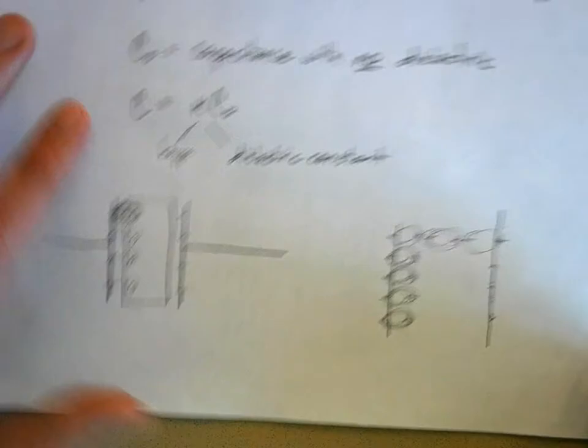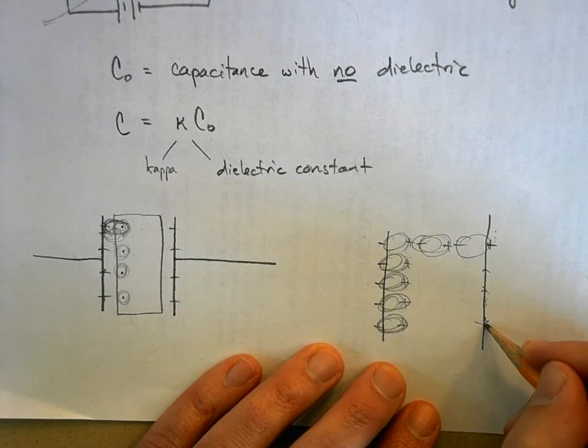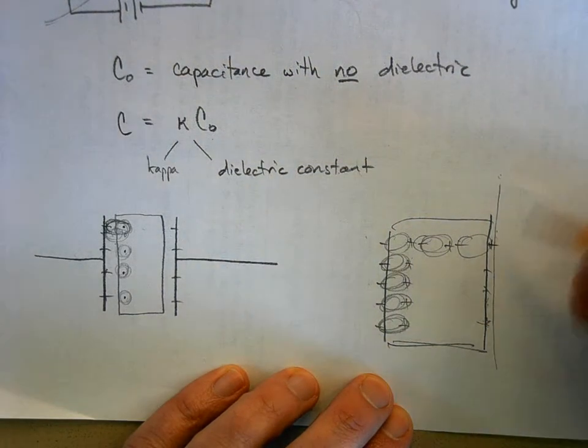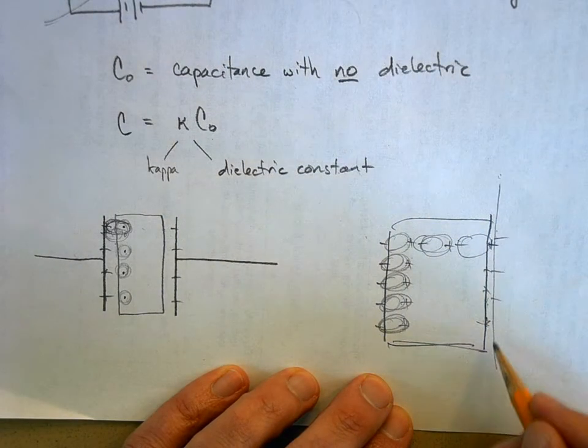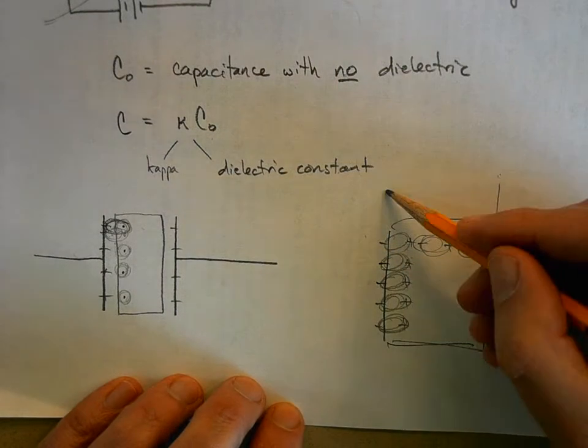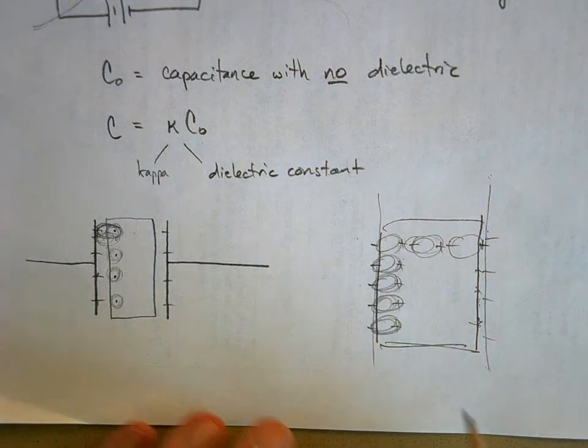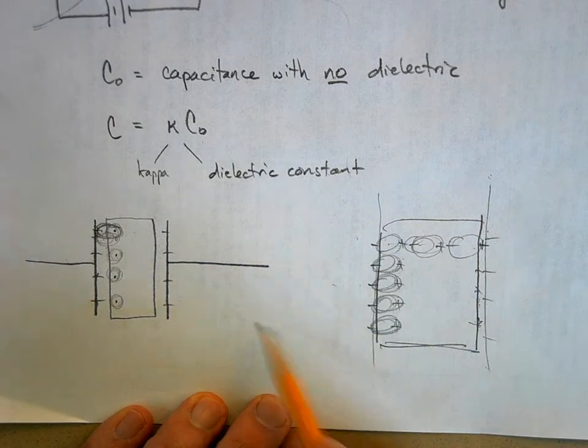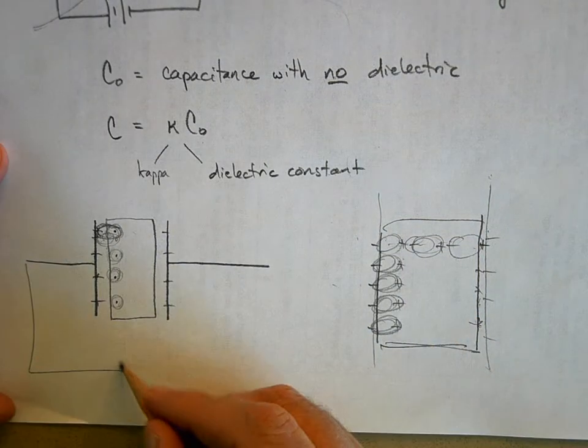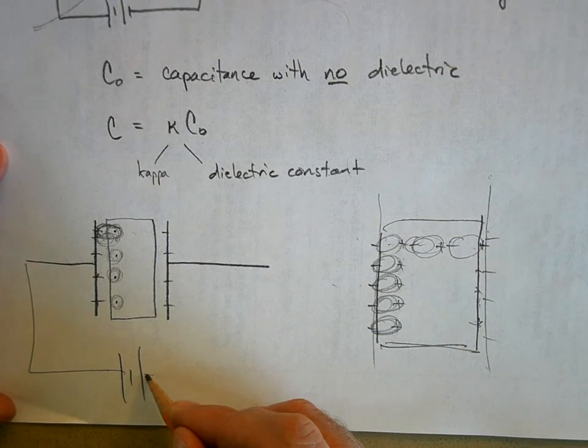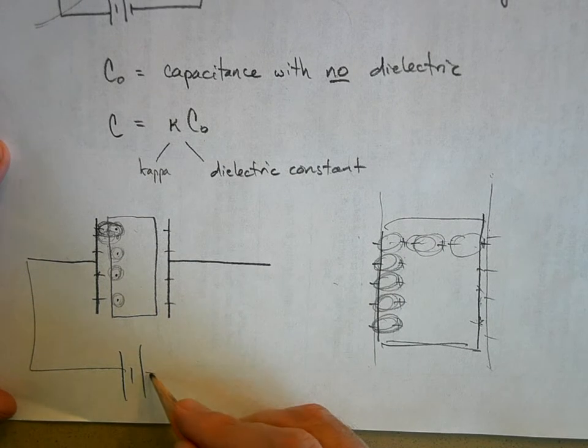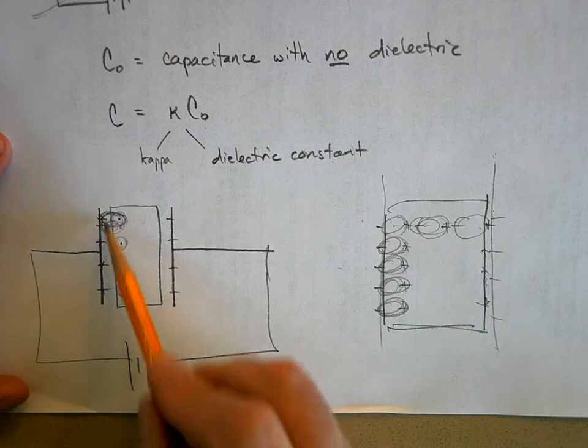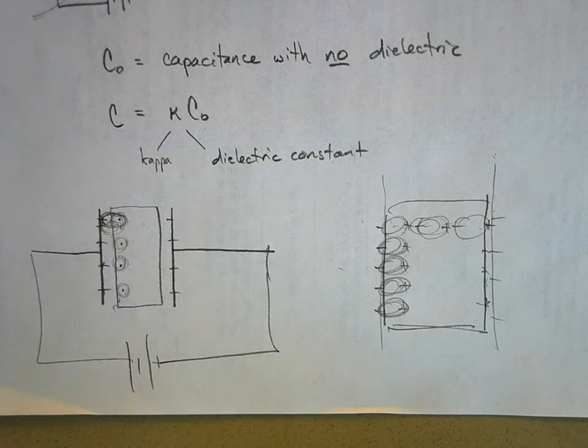But that positive bound charge to the dielectric material I've drawn here kind of cancels out the negative charge that was on this side of the capacitor. And what it does is it propagates this electric field through here, and it allows you for the same voltage, here's my battery down here, it allows you to store more charge for the same voltage.